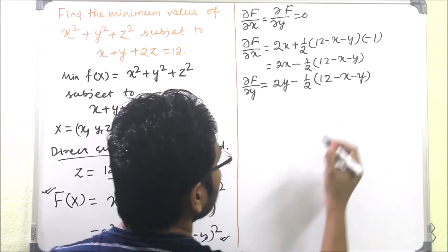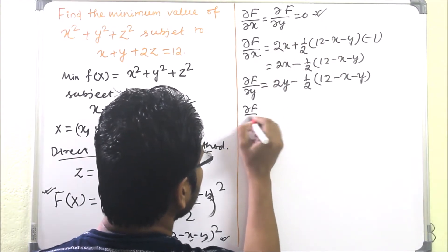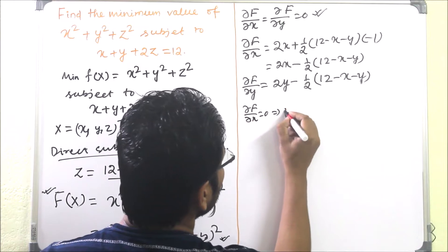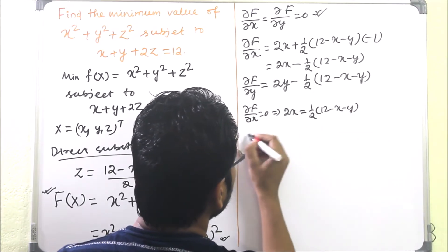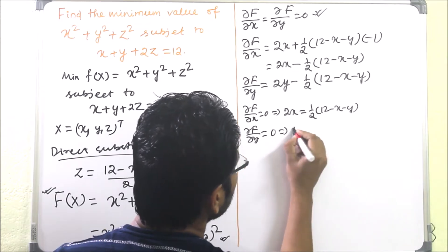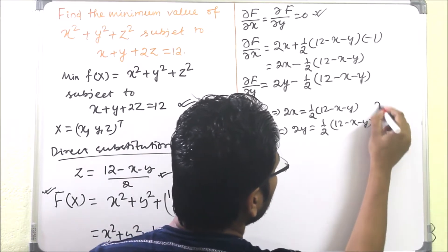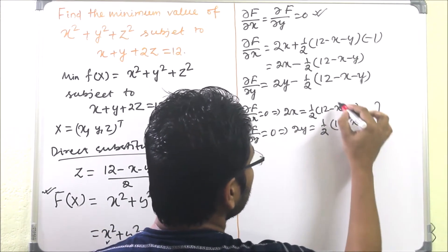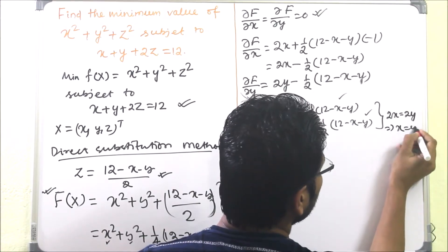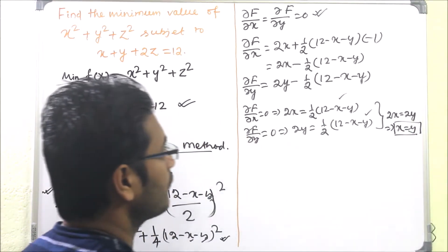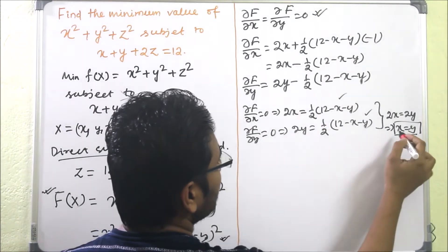Setting ∂F/∂x = 0 gives 2x = (1/2)(12 − x − y). Setting ∂F/∂y = 0 gives 2y = (1/2)(12 − x − y). Since the right-hand sides are equal, we get 2x = 2y, which implies x = y. So whatever the value of x is, y will be the same.